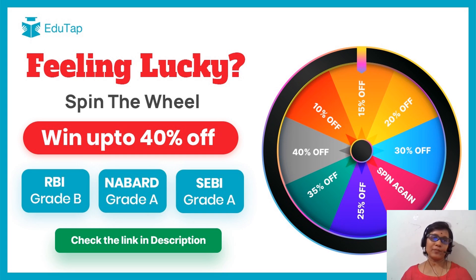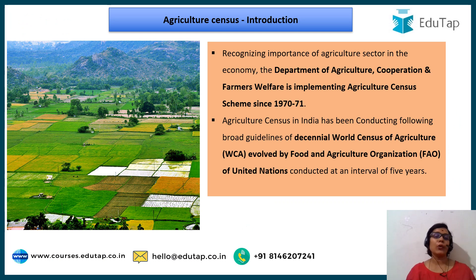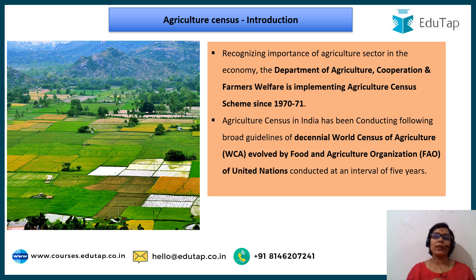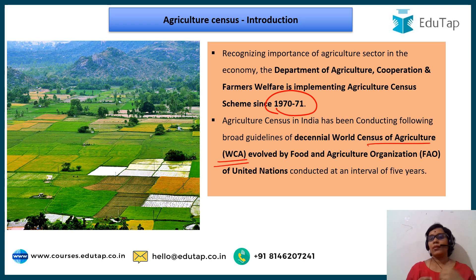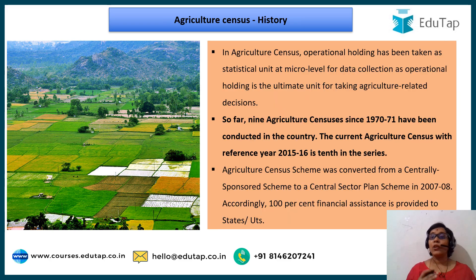As part of the five minute series, the important topic we are going to discuss today is the agriculture census. Recognizing the importance of the agriculture sector and its contribution towards the Indian economy, the Department of Agriculture Cooperation and Farmers Welfare started implementing the agriculture census scheme since 1970-71. This census in India has been conducted following the broad guidelines of the Decennial World Census of Agriculture (WCA) evolved by the Food and Agriculture Organization, but our Indian agriculture census is conducted at an interval of every five years.